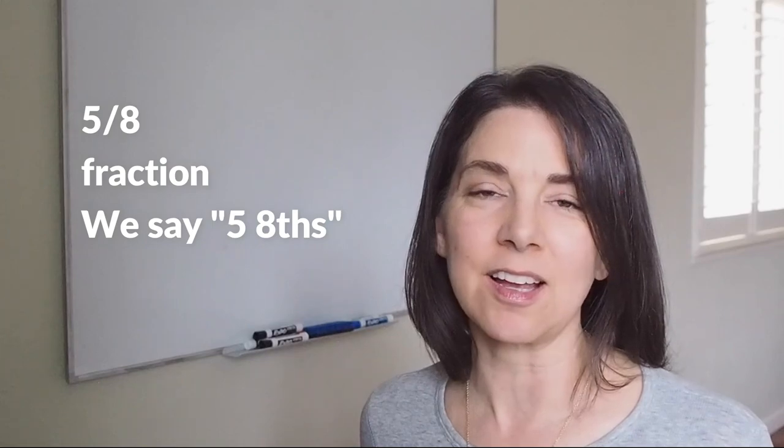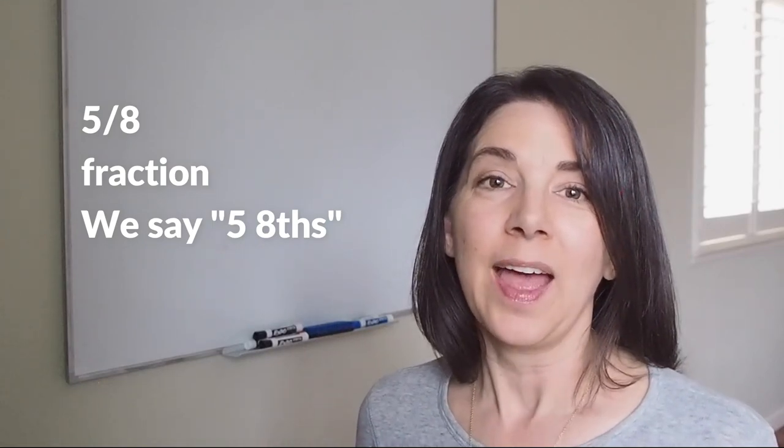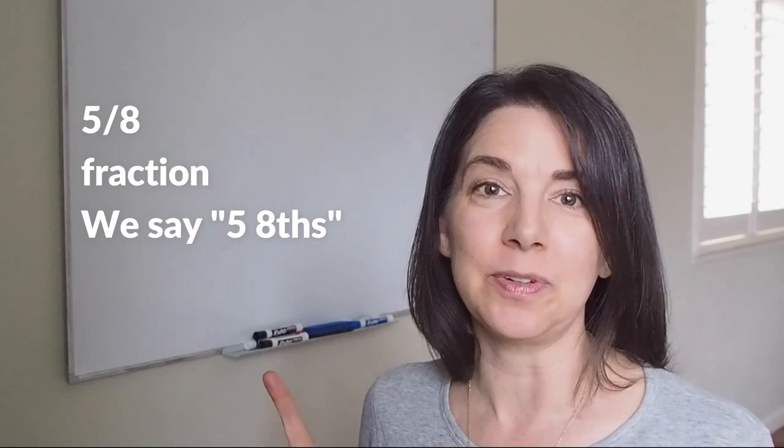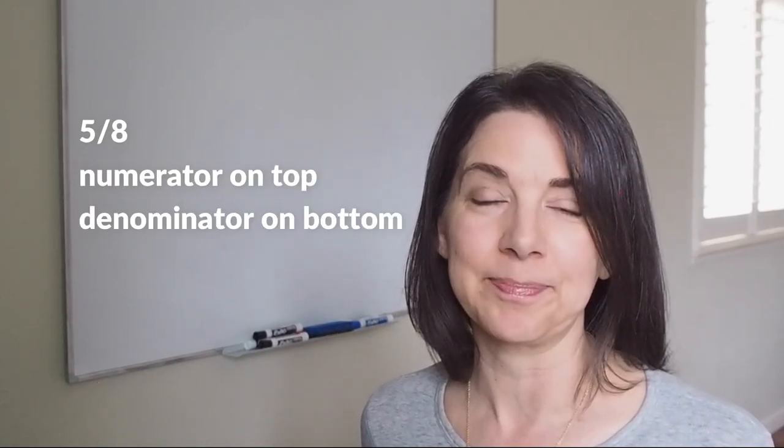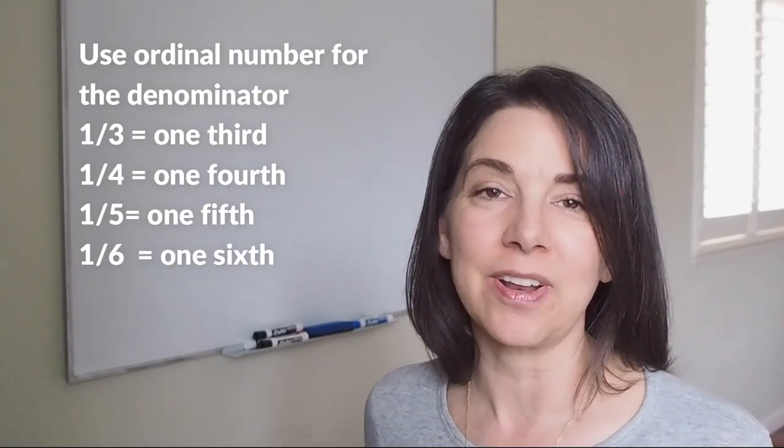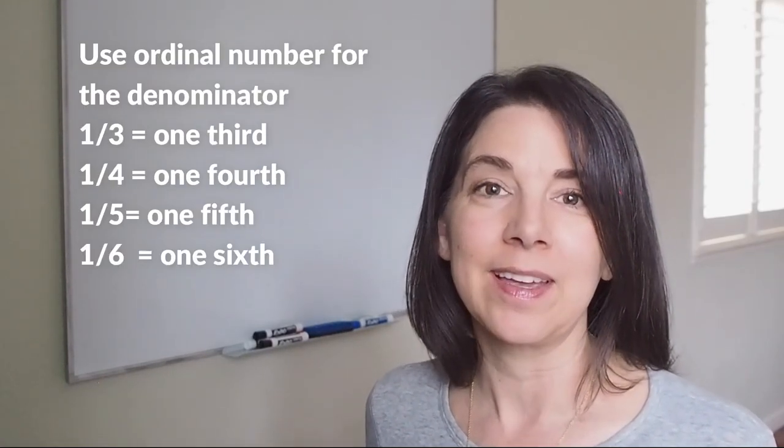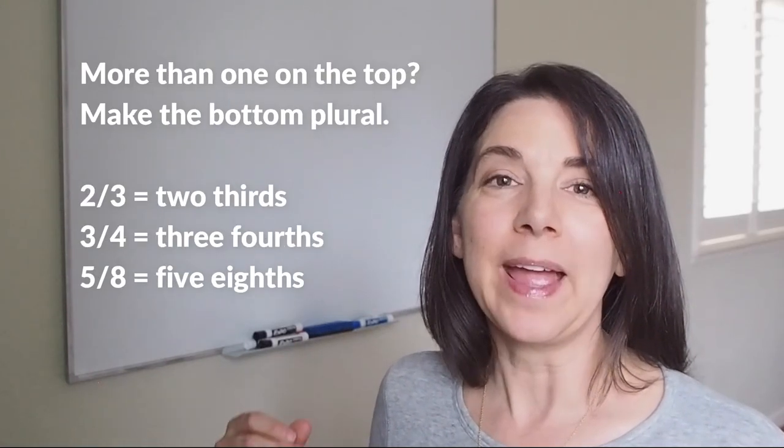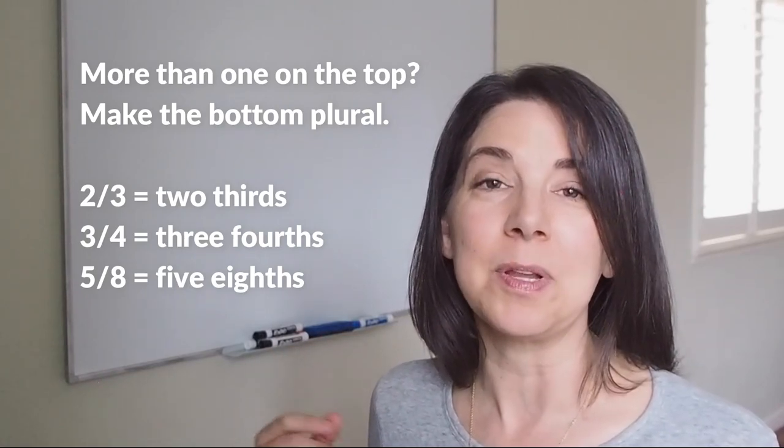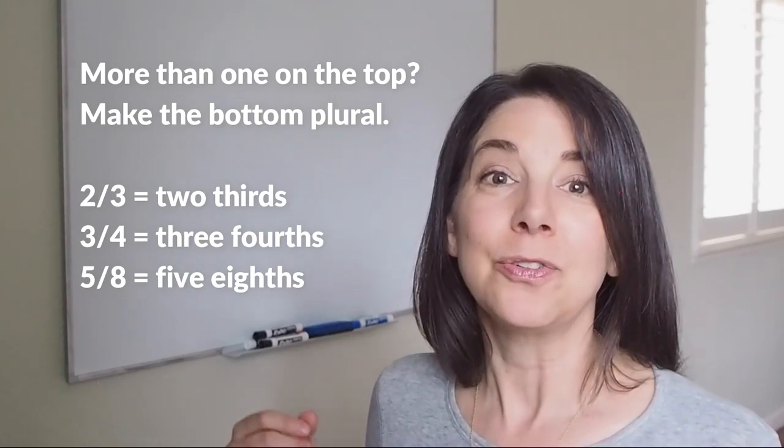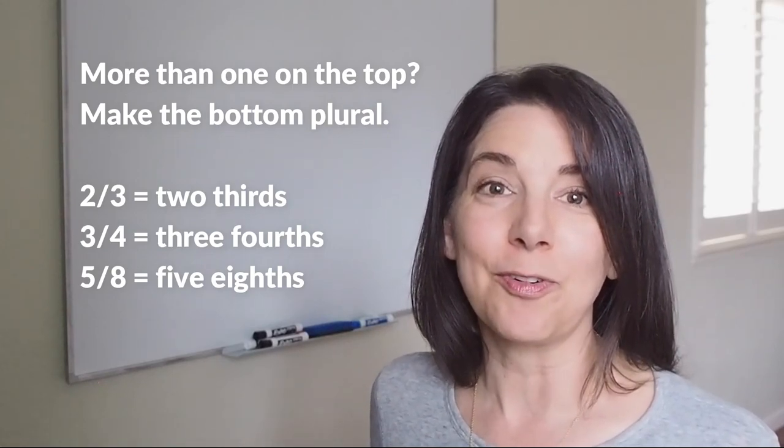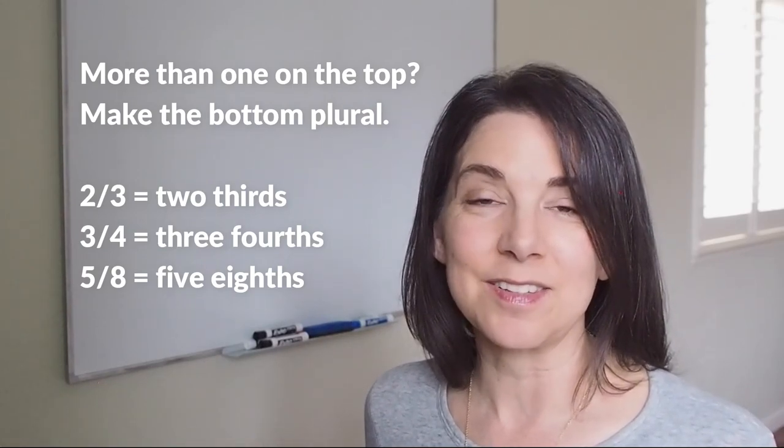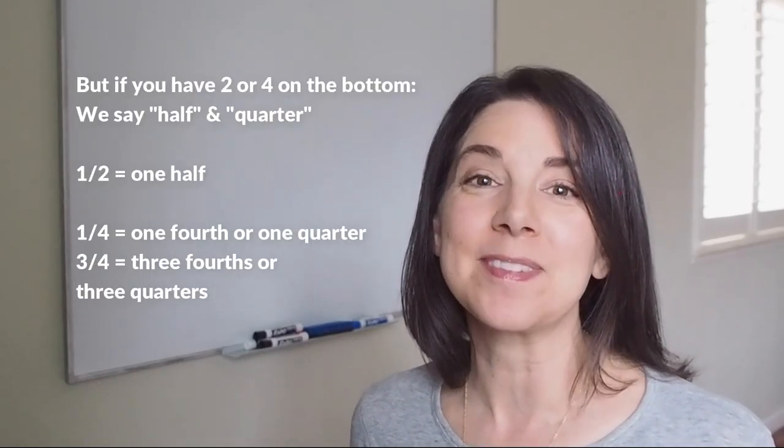Numbers that are written like this, 5/8, are called fractions. And in fractions we have two numbers: we have the numerator on top and the denominator on the bottom. So for example, we say one-third, one-fourth, one-fifth, one-sixth, etc. If we have more than one on the top, then we make the bottom plural: two-thirds, three-fourths, or five-eighths, for example.